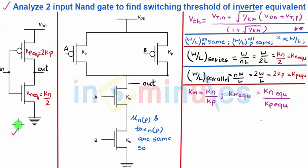Now in the first column you would see that I have drawn an inverter and I have written something in red which is Kp equivalent and Kn equivalent. For the time being you can just ignore that.